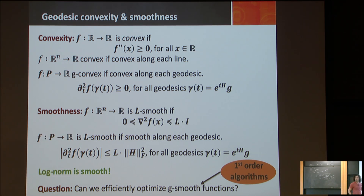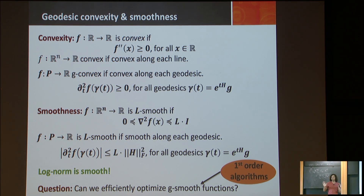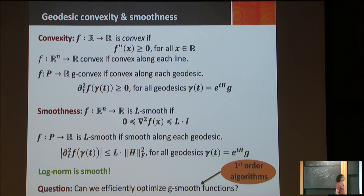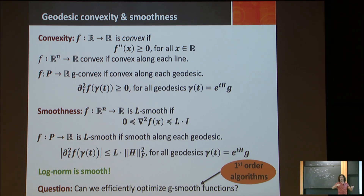We're going to generalize the textbook analysis of gradient descent to the geodesic setting. Audience: Do you really define L-smooth when you say log norm is smooth? Yes, for some L. L is the parameter in your algorithm — it's the step size, roughly 1/L. The better — the lower the L — the faster your algorithm runs. Smoothness means there exists such an L, and we find it. When you talk about first-order algorithms...